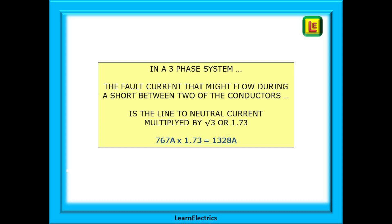So what have we found out? In a three phase system, the fault current that might flow during a short circuit between two of the conductors is the line to neutral current multiplied by the square root of 3, or 1.73. In our example, 767 amps multiplied by 1.73 is 1328 amps.